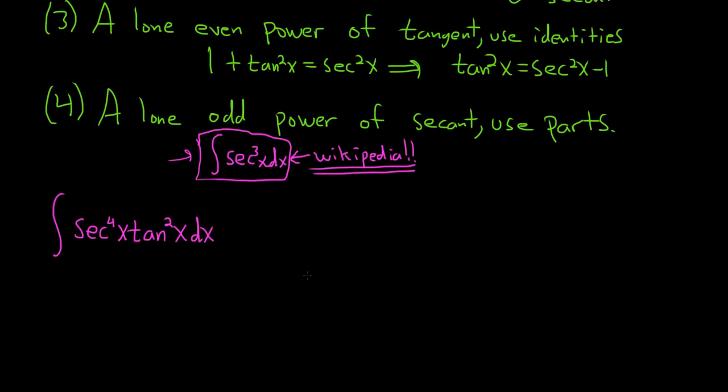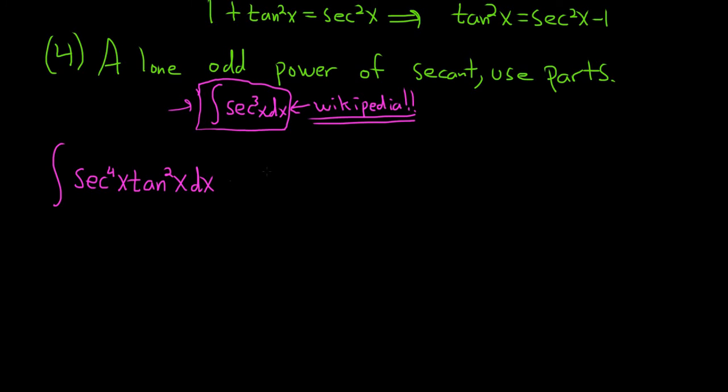In this case, we have an even secant, so we're going to save a secant squared. The first step will be to pull out a secant squared. So we'll have secant squared x tangent squared x, and we're saving a secant squared. Because we did that, our u has to be tangent, because the derivative of tangent is secant squared. But we still have secant squared here, which is not okay, because u is tan x.